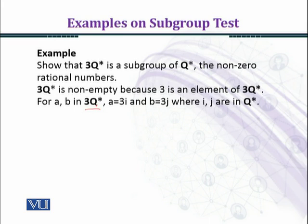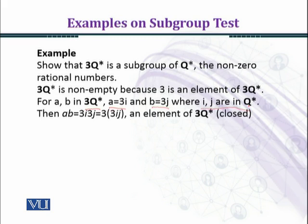and b = 3j, where i and j are in Q*, nonzero rational numbers. Now we multiply these two elements: a·b = 3i·3j, and we can write this in the form 3(3ij) using associative property.